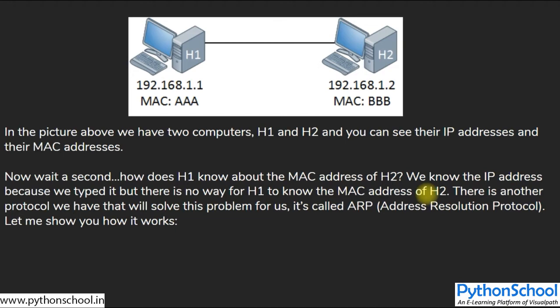IP protocol is like the courier service — if you give it a source IP, source MAC, destination IP, and destination MAC, it will carry and deliver the packet. But if you don't specify the destination MAC address, you cannot deliver the packet. So how does the source come to know the destination MAC address? That is where ARP protocol comes in to solve this problem.